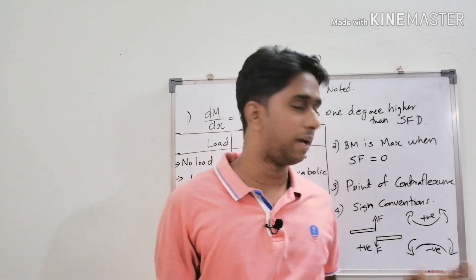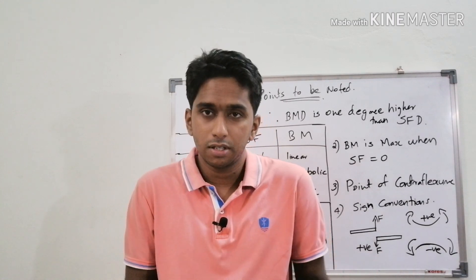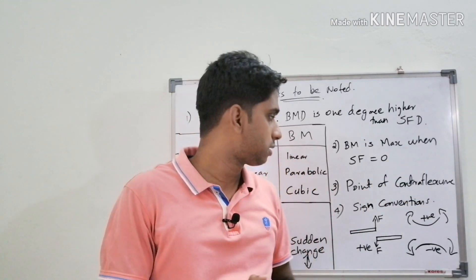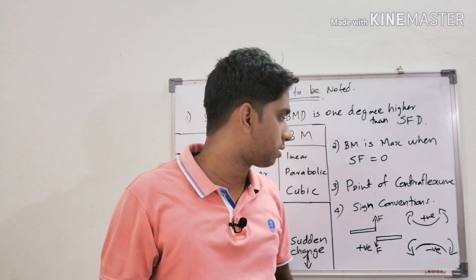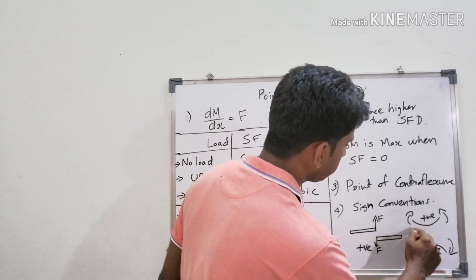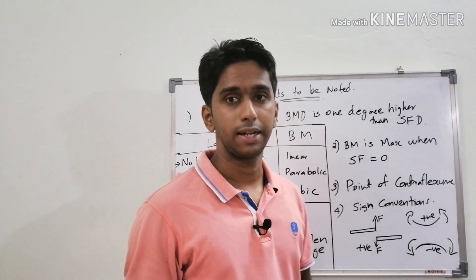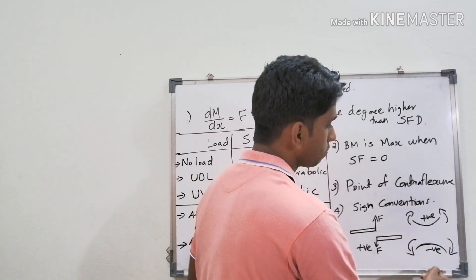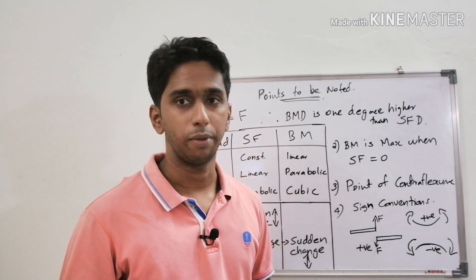For bending moment, all moments creating a sagging effect — bending the beam in a sagging shape — are positive. Moments creating a hogging effect are negative. From the left side, a clockwise moment and from the right side an anti-clockwise moment is taken as positive. From the left side an anti-clockwise moment and from the right side a clockwise moment is negative, as that creates a hogging moment.